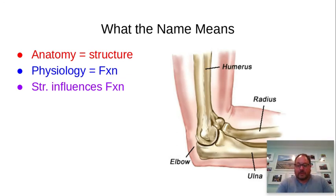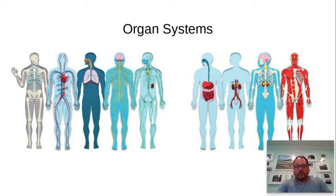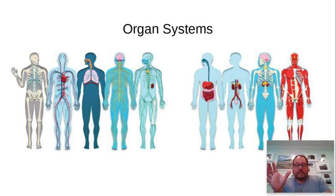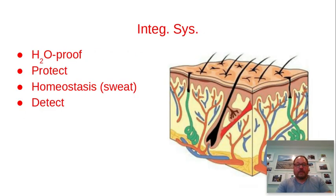So structure is always going to influence function — that's one of the key ideas of the course. In this section, I'd like to spend the bulk of our time looking at an overview of the different organ systems. You have that systems poster that's due on Wednesday of next week, which has you do an overview of what the basic organ systems do. So this lecture is a nice summary that will help you with that assignment. Let's start on the outside and work our way in.